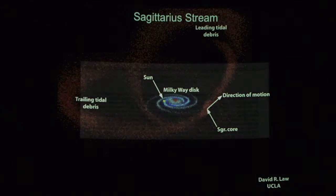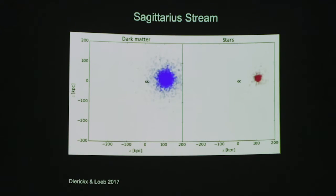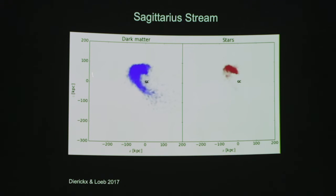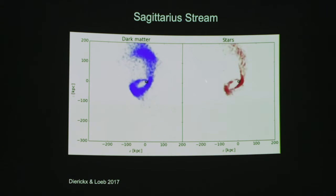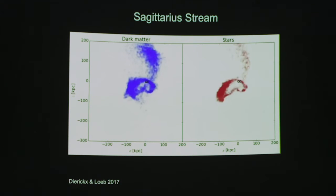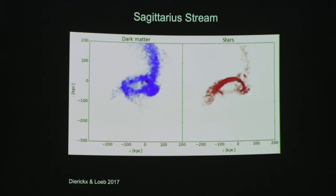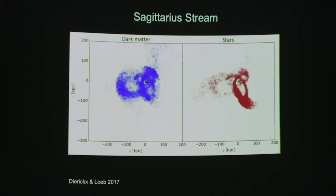This particular simulation came from astronomer Dierichs along with Abraham Loeb, both from Harvard. They're running a simulation that shows both the dark matter as well as the stars. GC stands for galactic center.